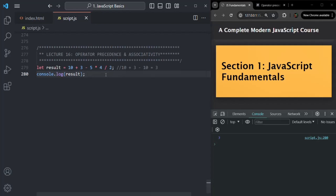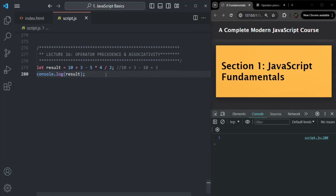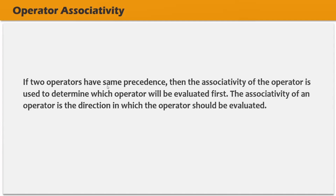So this is what operator precedence and associativity is. Operator precedence is used to determine the order in which an expression is evaluated — it determines which operator should be evaluated first. If two operators in an expression have the same operator precedence, then the associativity of the operator is used to determine which will be evaluated first. Associativity is basically the direction in which the operator should be evaluated.